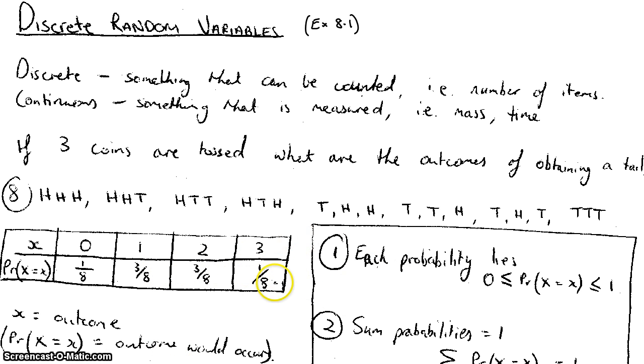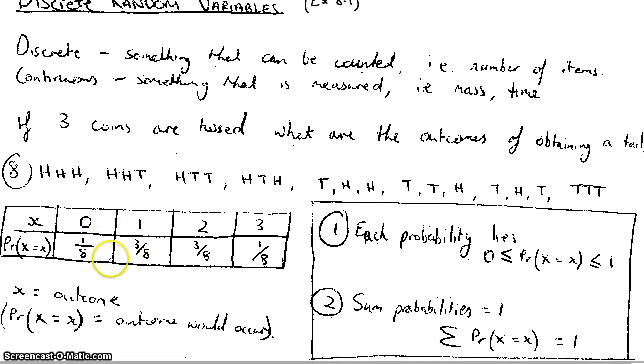Two things for this probability table to actually be considered a discrete random variable - just like we had with continuous random variables. Each probability must lie between zero and one, so you can't get a negative probability and you can't get a probability greater than one. The other thing that needs to happen for this to be a discrete random variable is that the sum of the probabilities must equal one. For example, this sign here is the sum of all the probabilities equals one. One on eight plus three on eight is four on eight, plus three on eight is seven on eight, plus one on eight is eight on eight. If it's bigger than one or less than one, it's not a discrete random variable.